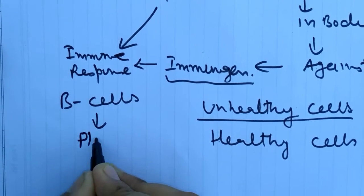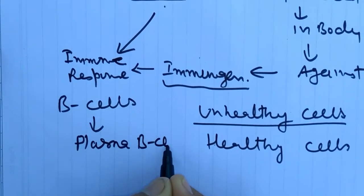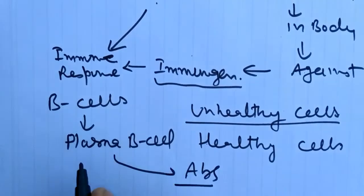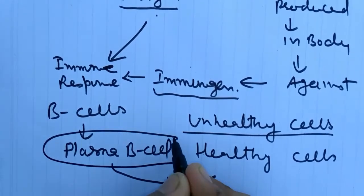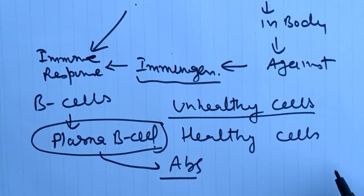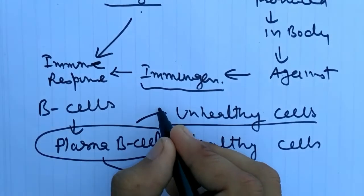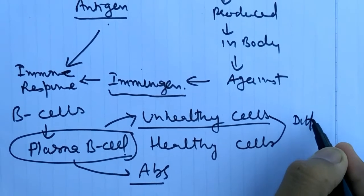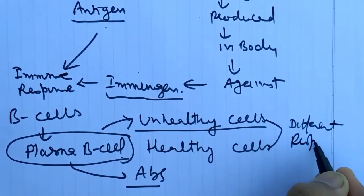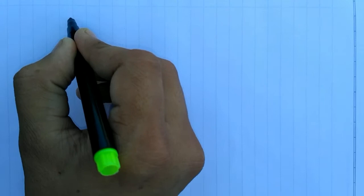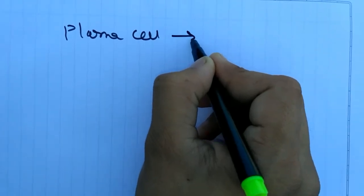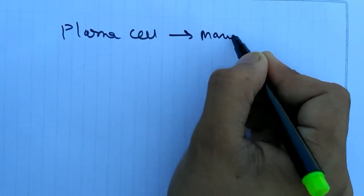Plasma B cells secrete antibodies. In the normal condition, the plasma B cells and in the unhealthy condition, plasma B cells have different properties. In the normal condition, plasma cells can generate many varieties of IgG, that is immunoglobulin type G.